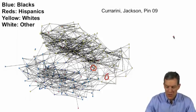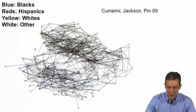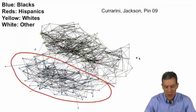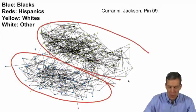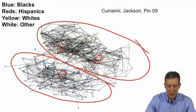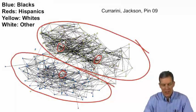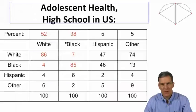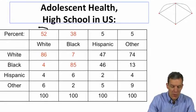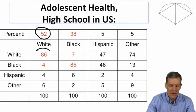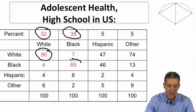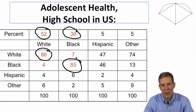What the spring algorithm reveals is a separation: most of the blacks are in one group, most of the whites are in another group, and the Hispanics tend to be a little more integrated. You can see a strong segregation pattern visually. Looking at the numbers: whites make up 52% of the population, yet 86% of their friendships are with other whites. Blacks make up 38% of the population, yet 85% of their friendships are with other blacks.